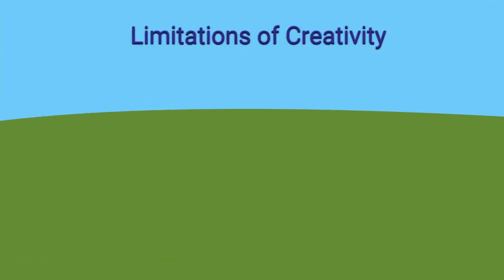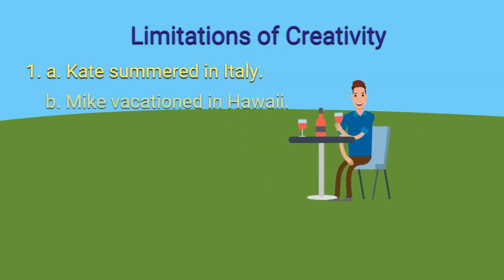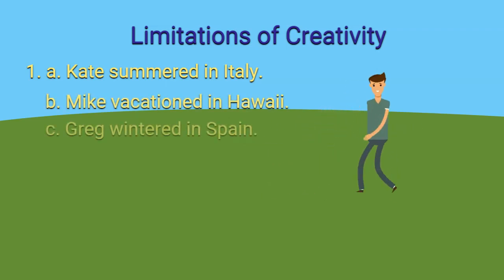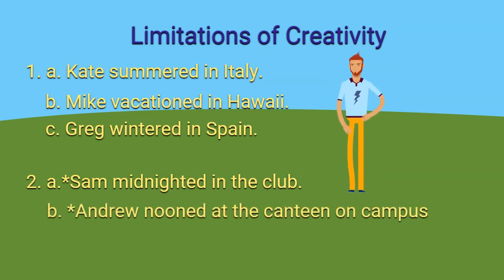Even though we can make use of creativity, there are some limitations. I have examples in two sets. Set one: Kate summered in Italy; Mike vacationed in Hawaii; Greg wintered in Spain. Set two: Sam midnighted in the club; Andrew nooned at the canteen on campus. The words summered, vacationed, wintered, midnighted, and nooned are all nouns, but here we are using them as verbs as a result of creativity.